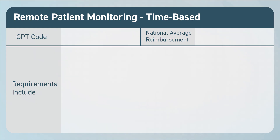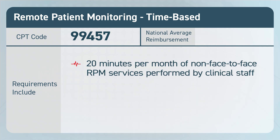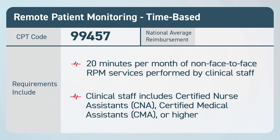First is code 99457 for at least 20 minutes of non-face-to-face RPM services per month performed by clinical staff. 99457 has a current national average reimbursement of $48.